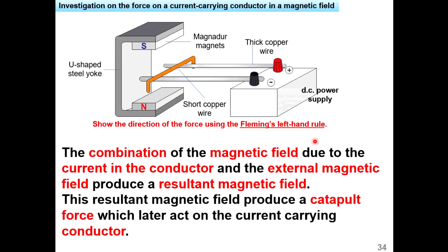This simple apparatus setup lets us see the effect of force acting on a current-carrying conductor in a magnetic field. We use a DC power supply, two thick copper wires, and one short copper wire — all uninsulated — also known as a bridge conductor. When the DC power supply is switched on, current flows from the positive terminal through the thick copper wire, through the bridge conductor, and back to the negative terminal. The bridge conductor is placed between two magnets attached to a U-shaped steel yoke.